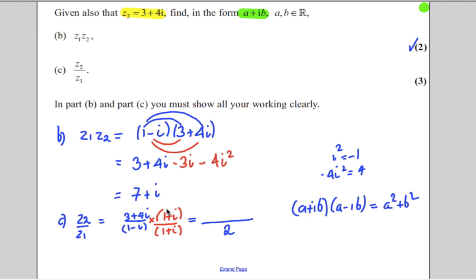And on the top it's just a case of multiplying this out. 3 times 1 is 3, 3 times i is 3i, 4i times 1 is 4i, and 4i times i is plus 4i squared.